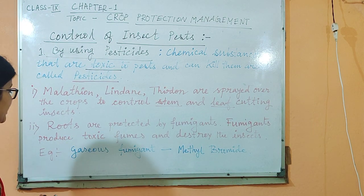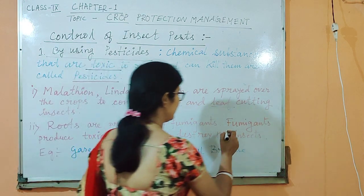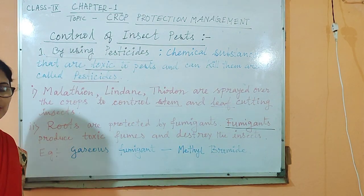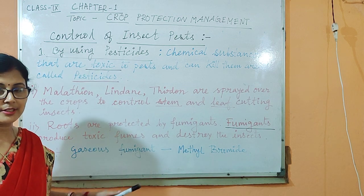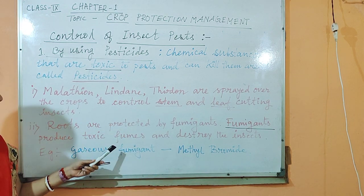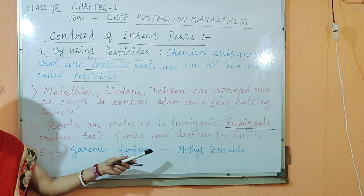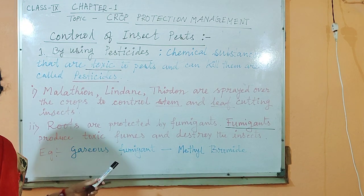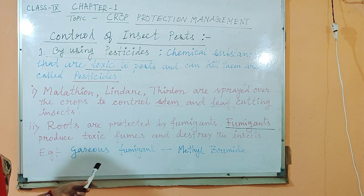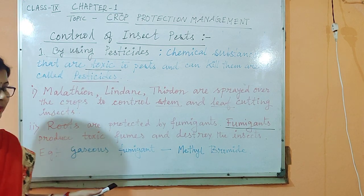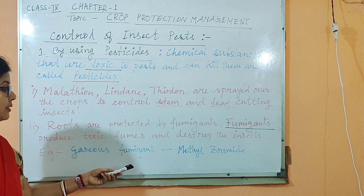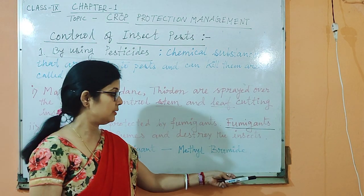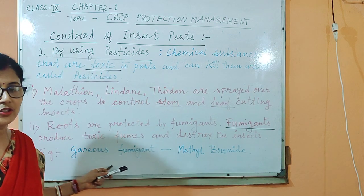What are fumigants? Fumigants are the chemical formulations that produce toxic fumes and destroy the insects. Fumigants can be solid, liquid, or gas. One example you should write: methyl bromide is the gaseous fumigant.